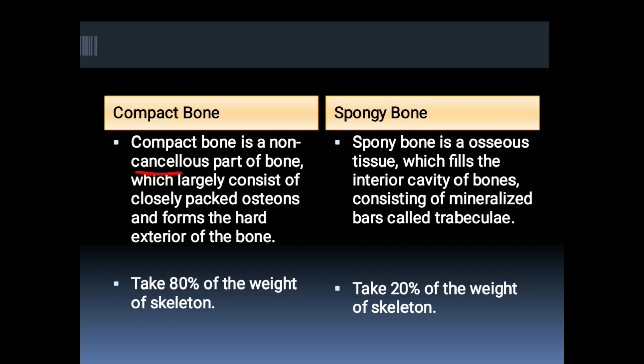Spongy bone is the cancellous part of a bone. Compact bone is the non-cancellous part which largely consists of closely packed osteons and forms the hard exterior of the bone. Spongy bone is osseous tissue which fills the interior cavity of bones, consisting of mineralized bars called trabeculae.